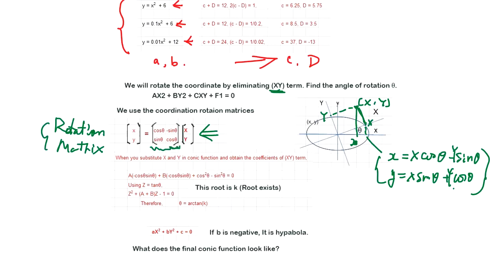You enter that and set this coefficient to zero, then you can eliminate xy. So tilted ellipse and hyperbola functions can be simplified to be this form. This is ellipse, and hyperbola is just negative here. So this is how you rotate the coordinate to simplify the conic function.